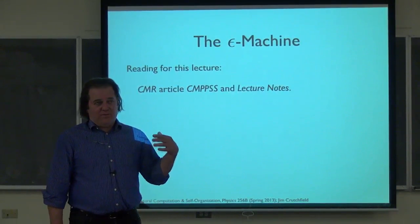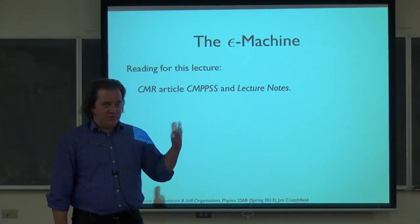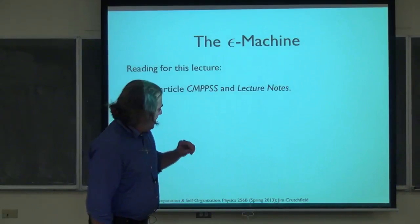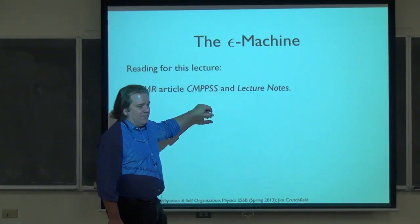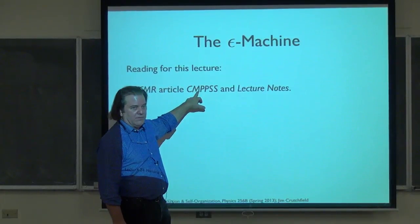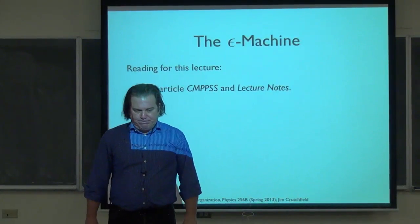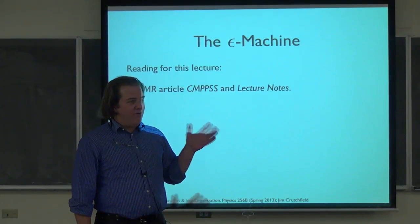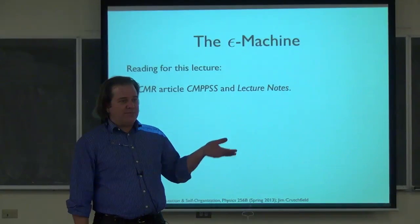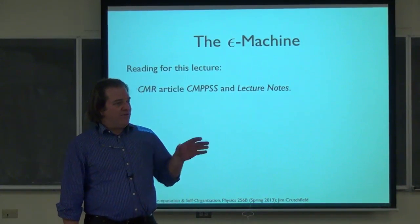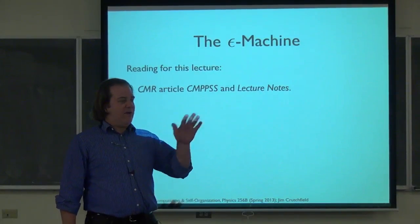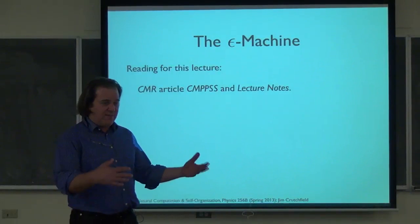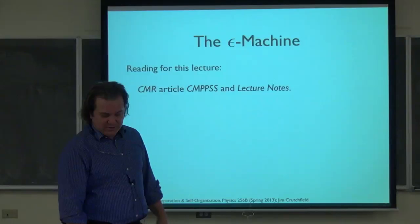There are a number of results — theorems, propositions, corollaries — and proof sketches of how they work. The longer, more detailed proofs are in the computation mechanics article. Today I will give what I'm going to call proof sketches. Think back to Cover and Thomas when you were reading through and they introduced various properties of information theory. The kind of proofs Cover and Thomas give are higher-level, not highly technical, but constructive and give you intuition. That's my goal today: to establish the main properties of the epsilon machine.